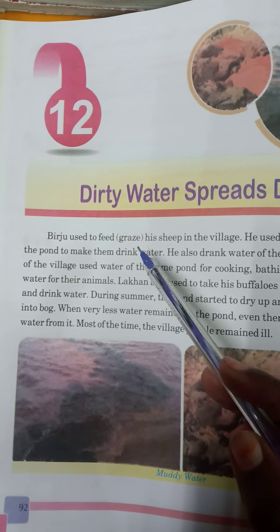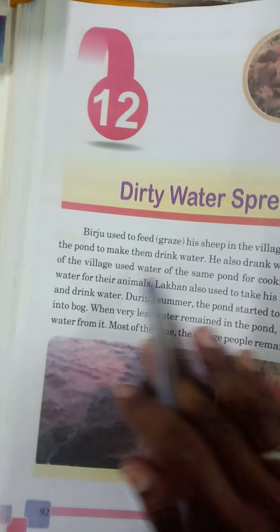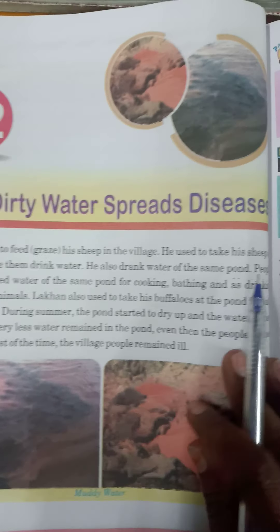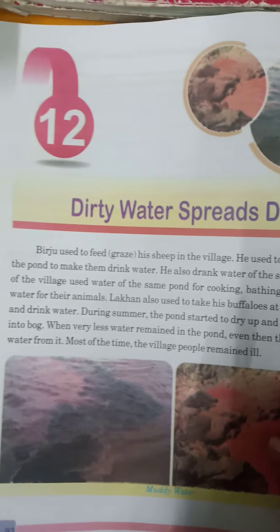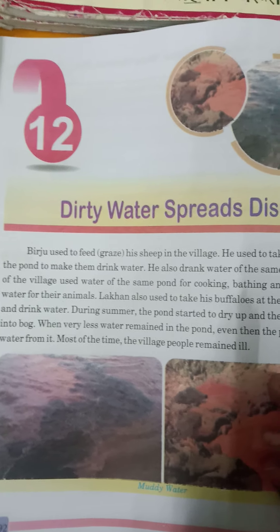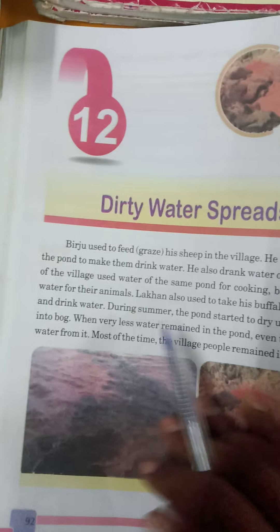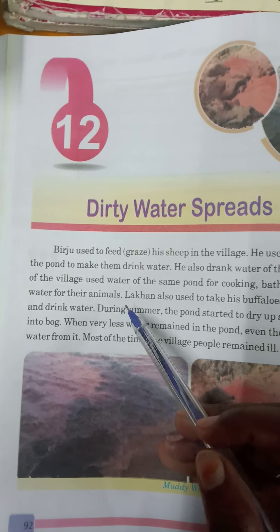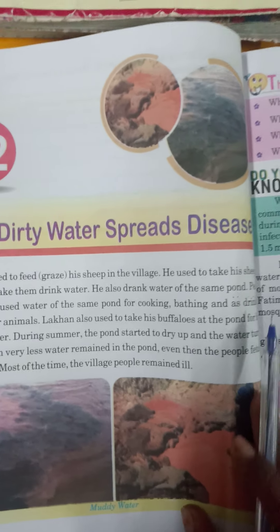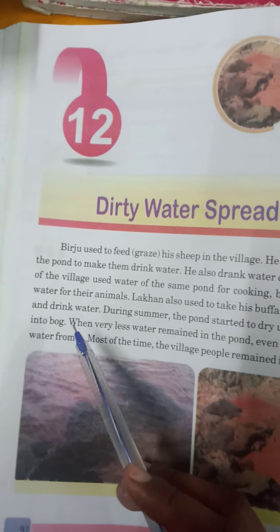Virju used to feed his sheep in the village. He used to take his sheep to the pond to make them drink water, and he also drank water from the same pond. People of the village used water from the same pond for cooking, bathing, and as drinking water for their animals. Lakhon also used to take his fellows to the pond for a bath and to drink water.